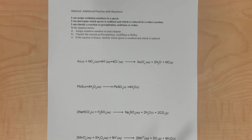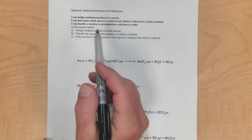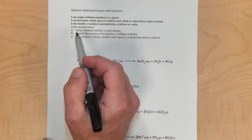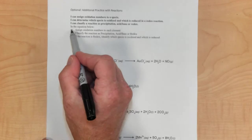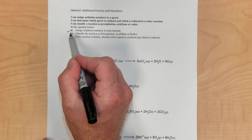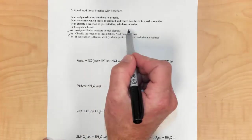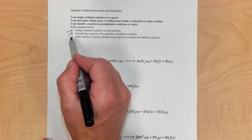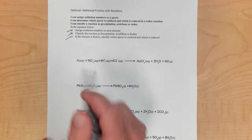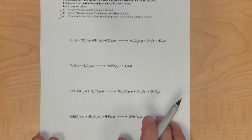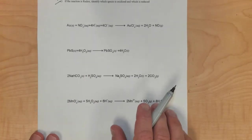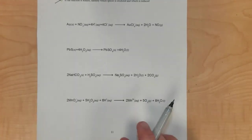Here's the last part of the practice test. This section asks you to assign oxidation numbers to each element, classify reactions as precipitation, acid-base, or redox, and if the reaction is redox, identify which species is oxidized and which is reduced.